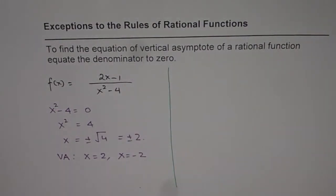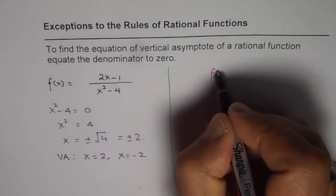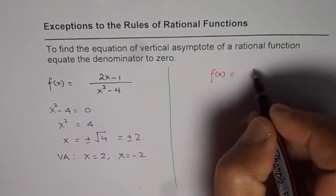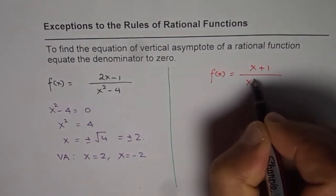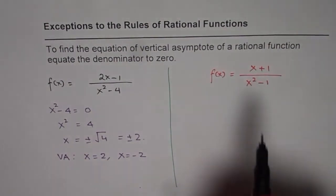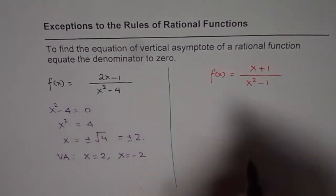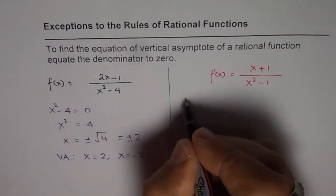So, if I write down f(x) equals x plus 1 over x squared minus 1. In that case, if I do the same calculation, equating denominator to 0,